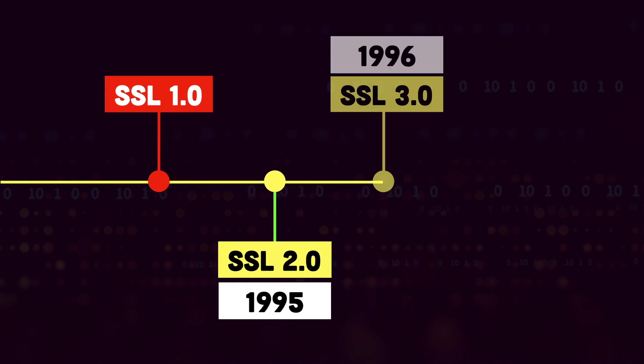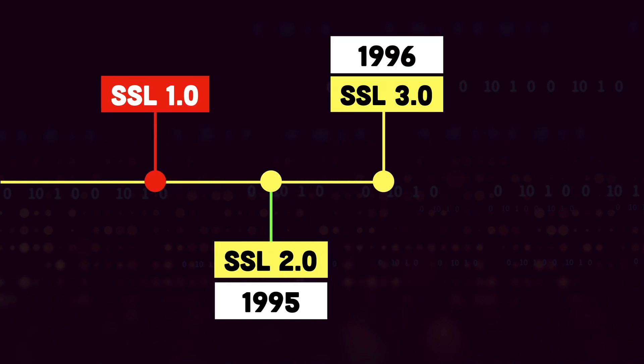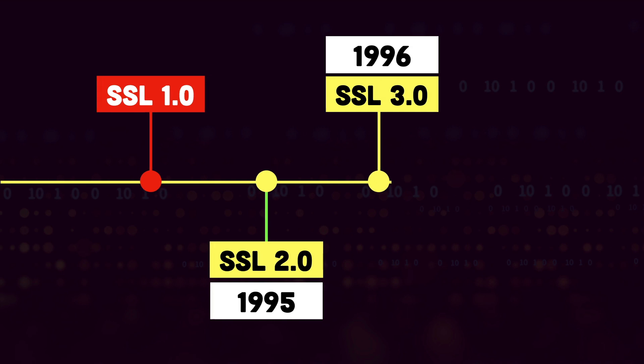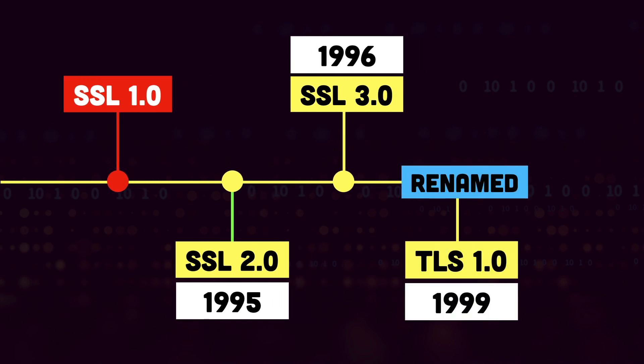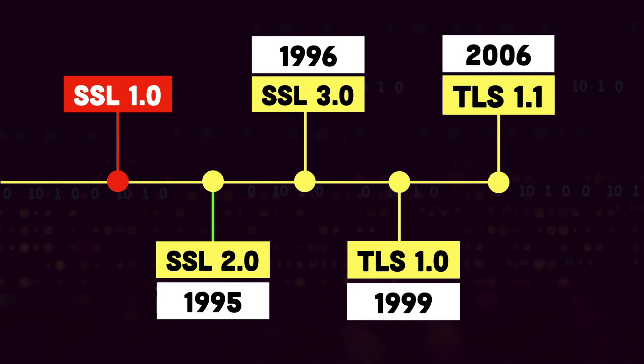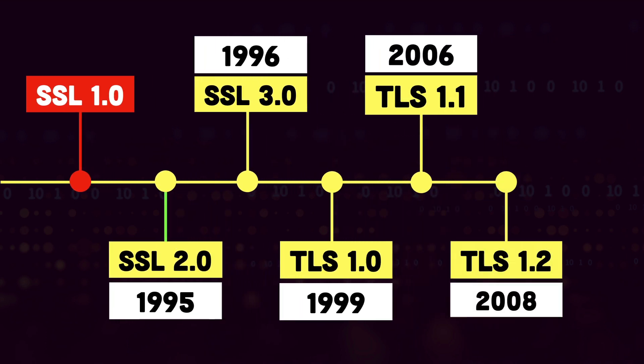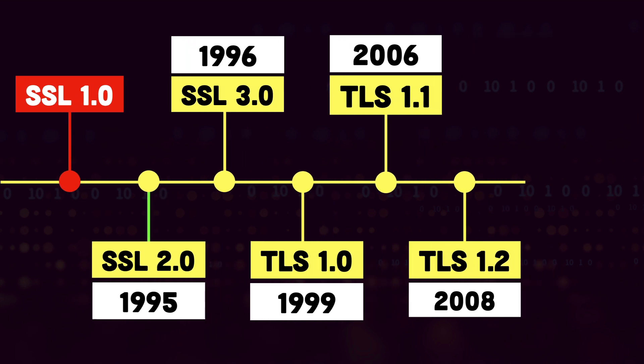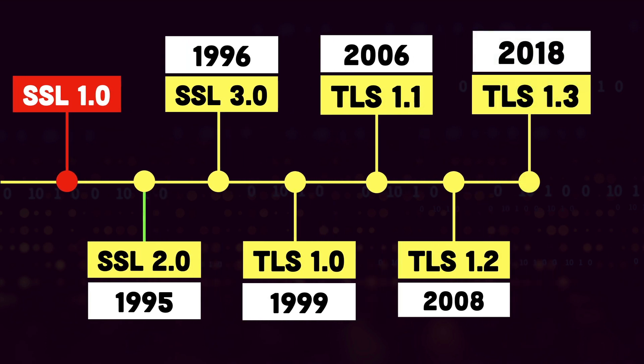Then in 1996 we got SSL 3.0, and then in 1999 SSL was renamed and we got TLS 1.0. Then in 2006 we got TLS 1.1, in 2008 we got TLS 1.2, and the most recent version is TLS 1.3 which was released in 2018.